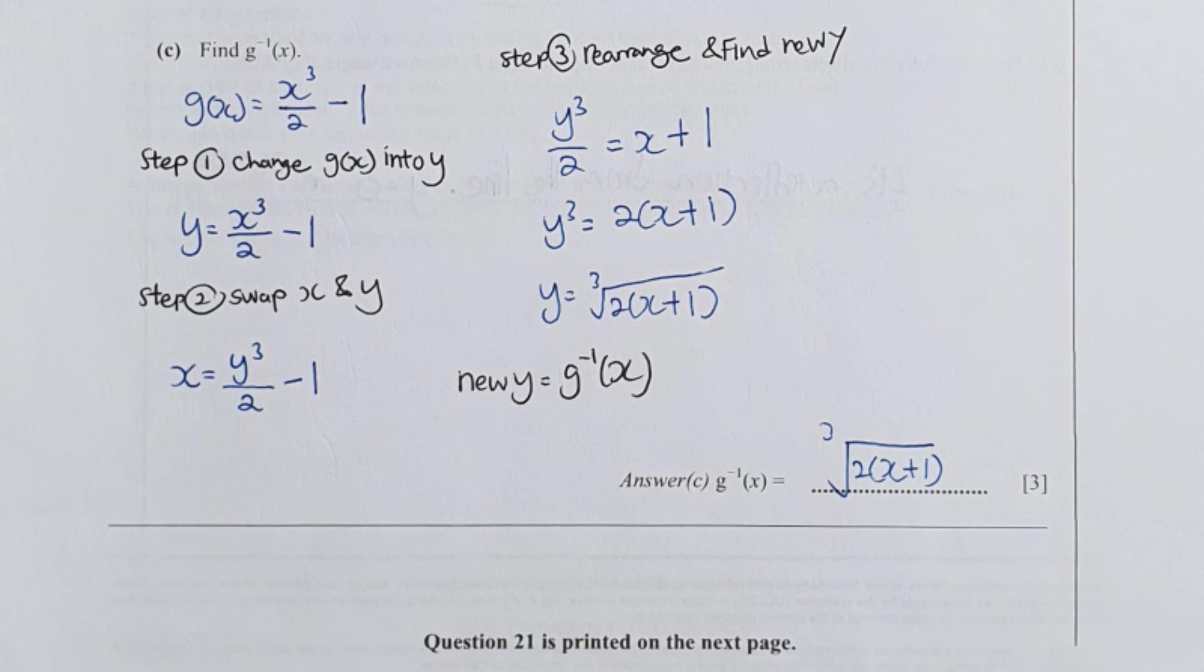Part C is pretty straightforward. I just repeat the same thing I did to section A earlier. The same three steps, then you should be able to identify your answer as cube root of 2 bracket x plus 1.